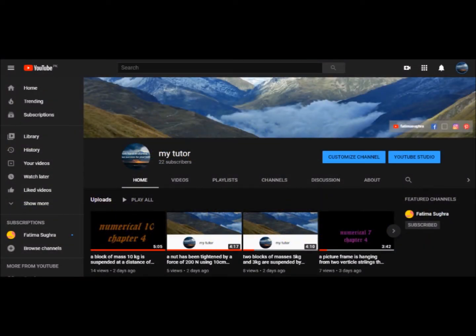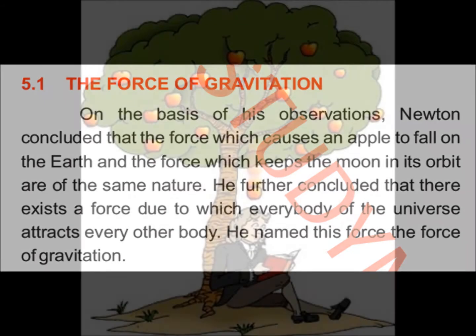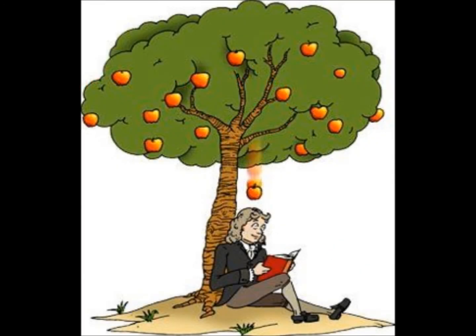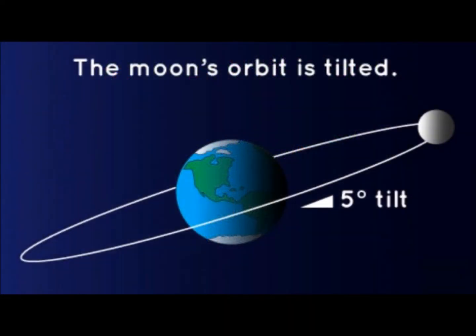So the force of gravitation — what we will see here. On the basis of Newton's observation, gravitation's force is based on observation. Newton concluded that the force which causes an apple to fall to the earth and the force which keeps the moon in its orbit are the same in nature. Both forces are the same.